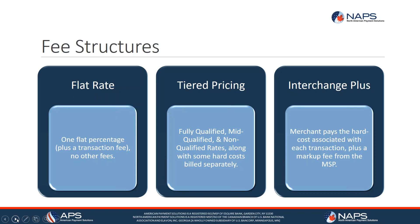The third way to be priced is interchange plus, which is becoming more and more prevalent. This is how we price all of our merchant accounts. As a quick example, if you're doing $100,000 a month in credit cards at an interchange plus rate of half a percent, your processor will earn $500 in profit. The rest of your bill will be the exact hard cost on every single transaction. So on a regulated debit card costing 0.05%, you add the processor's half a percent profit — versus 2% on tiered or 3% on flat. Interchange plus is the most transparent way to be priced and you'll save the most money.